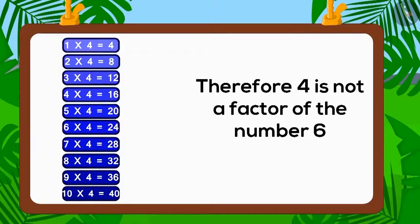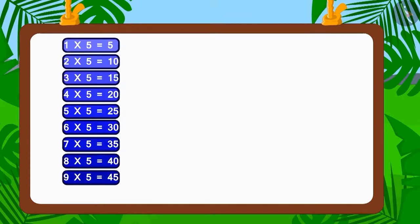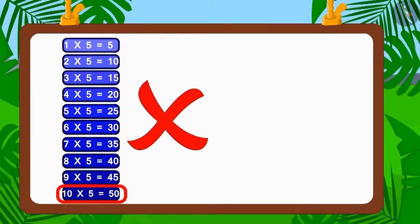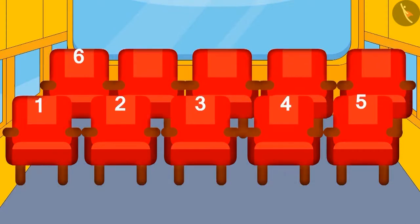Similarly, if we look at the table of five, then we will find that five is also not a factor of number six. So, a bus in which five people sit in each row will not be of any use to the villagers.